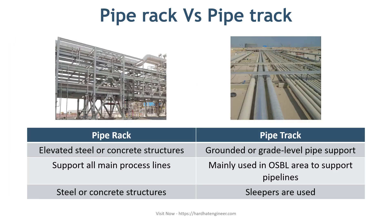Pipe rack supports all main process lines that connect equipment such as pumps, storage tanks, static vessels, and columns. It also connects various relief and blowdown headers. All lines leaving and entering the plant, and utility supply lines such as steam, air, cooling water, inert gas, etc.